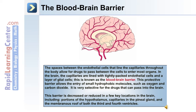The spaces between endothelial cells lining capillaries throughout the body allow drugs to pass between cells and enter the tissue. In the brain, however, the capillaries are lined with tightly packed endothelial cells and a layer of glial cells, making up the blood-brain barrier. This barrier allows entry of small hydrophobic molecules such as oxygen and carbon dioxide, but is very selective for drugs and prevents them from passing into the brain. The barrier is reduced in a few key locations: portions of the hypothalamus, the capillaries of the pineal gland, and the membranous roof of both the third and fourth ventricles.